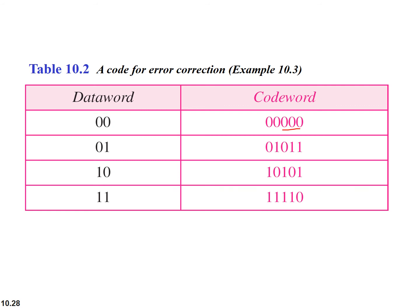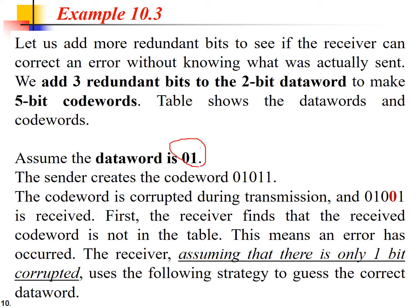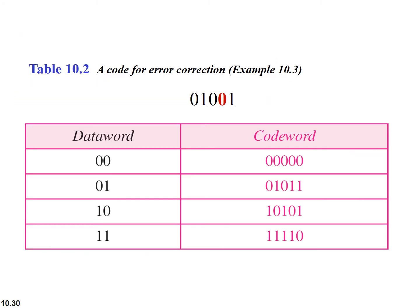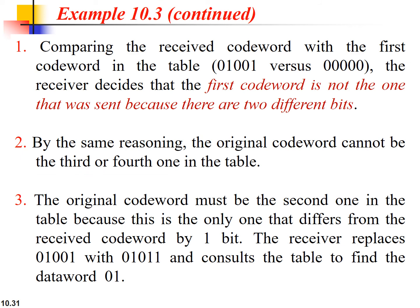When more redundant bits are generated, both error detection and correction capability improve. For example, transmitting code word zero-one-zero-one-one over a noisy link and receiving zero-one-zero-zero-one means one bit is corrupted. The receiver applies the checker algorithm, and if the received code word does not match any valid code word, the error is detected. With enough redundant bits, the receiver may even be able to identify and correct the corrupted bit.